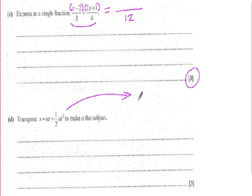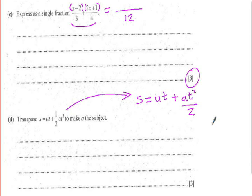Part d is a transposition question — rearranging the mechanics equation s = ut + ½at². Some students prefer it written as at²/2 rather than ½ in front; it's the same thing but can be easier to transpose. There are three marks there, so 10 marks total on that first page — 10 out of the 24 needed to pass. You need to understand algebraic fractions and transposition well.